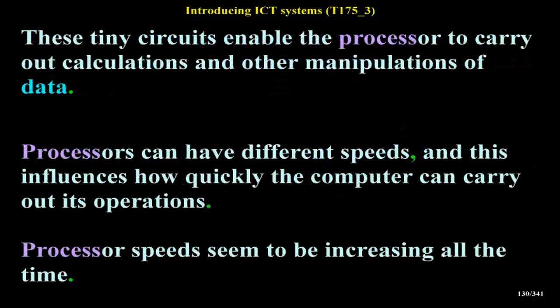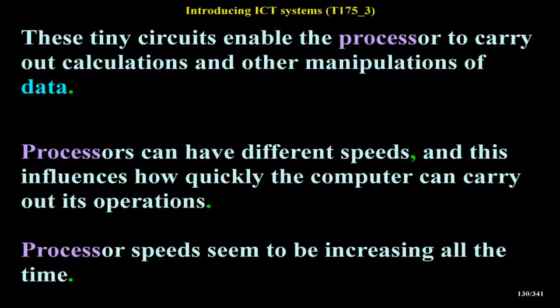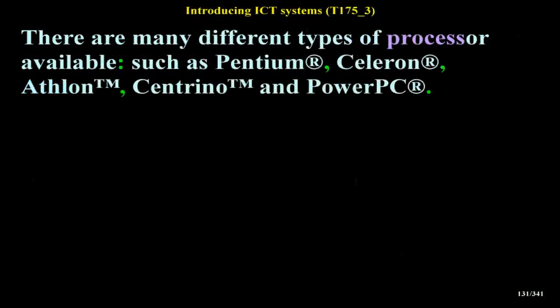Processors can have different speeds, and this influences how quickly the computer can carry out its operations. Processor speeds seem to be increasing all the time. There are many different types of processor available, such as Pentium, Celeron, Alpha, Centrino and PowerPC.